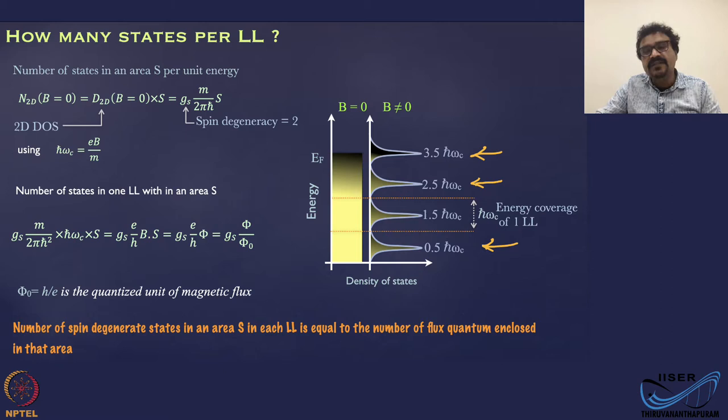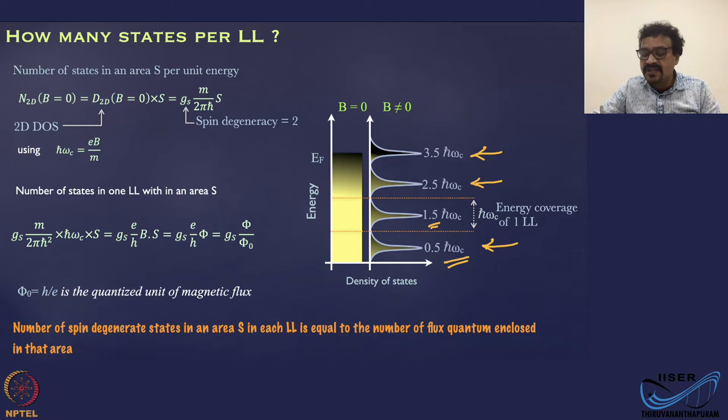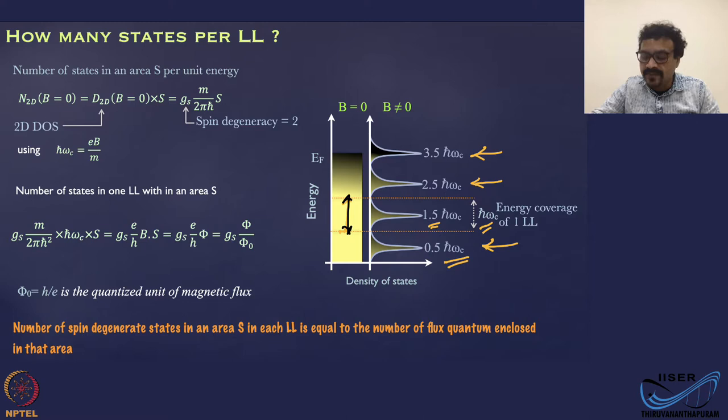With the energy quantized as (n + 1/2)ℏω, starting with 1/2 ℏω, then 3/2, 5/2, and so on, the energy spread or energy coverage for each Landau level is ℏω_c.